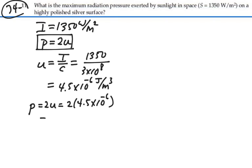That's not our usual pressure units. A joule per cubic meter is the same as a newton per meter squared. So this is 9 times 10 to the minus 6 newtons per meter squared.